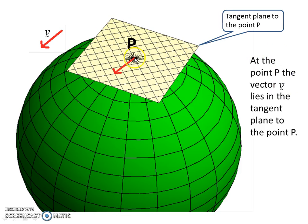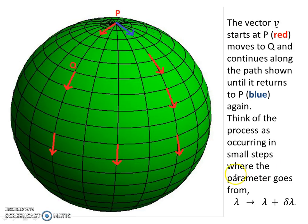Now, the tangent plane starting at the north pole, our vector v tangent to the sphere in the tangent plane. So at point P, the vector v lies in the tangent plane to the point P. Now the vector starts at P, it moves to Q, and then it keeps following parallel, moved in a parallel sense to itself, all the way around the loop here until it ends up back where it is.